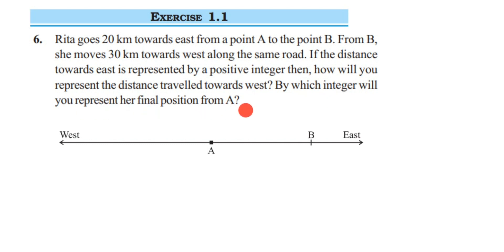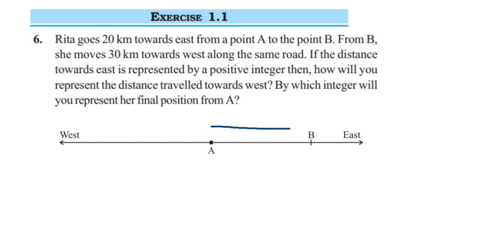They have given that Rita goes 20 km towards east from point A. So we have point A here, on the left side we have west and on the right side we have east. From point A, she went 20 km towards the east side to point B. From B, she moves 30 km towards the west. So from here again she went 30 km towards the west side — this is 30 km.